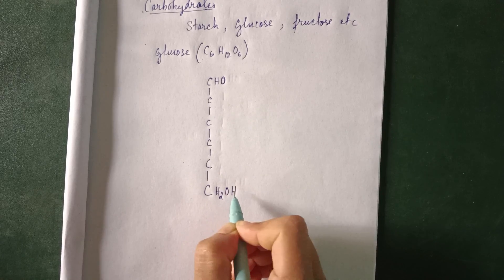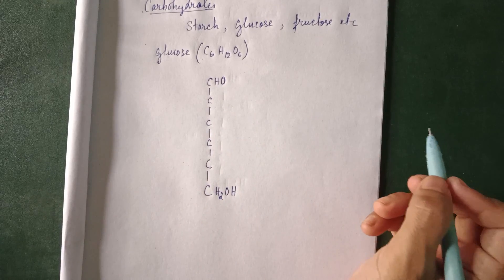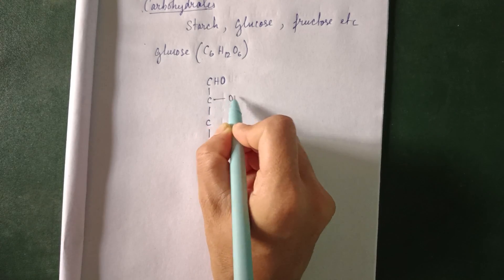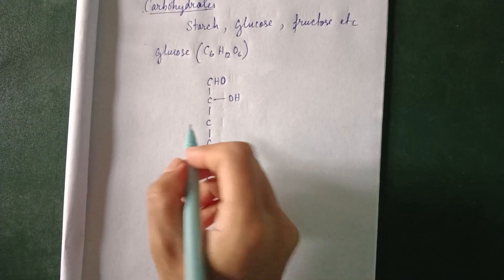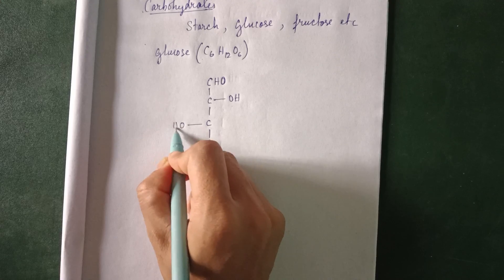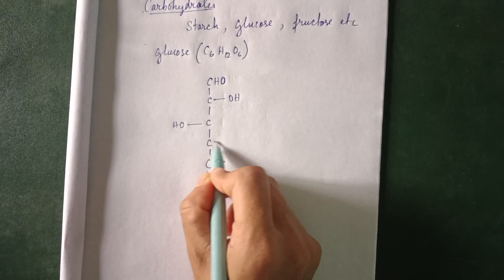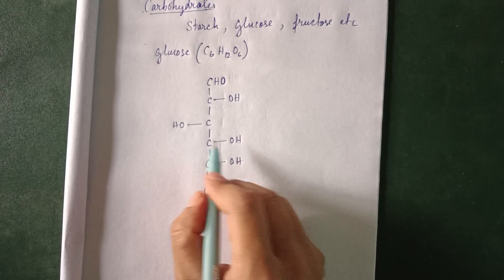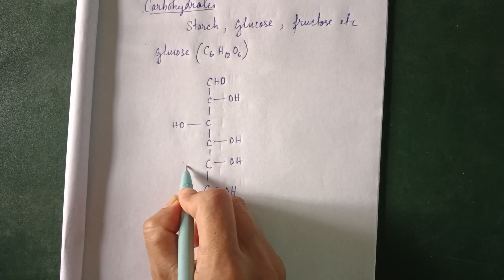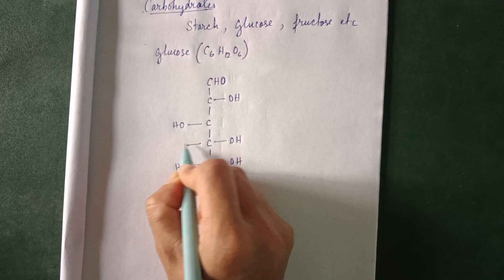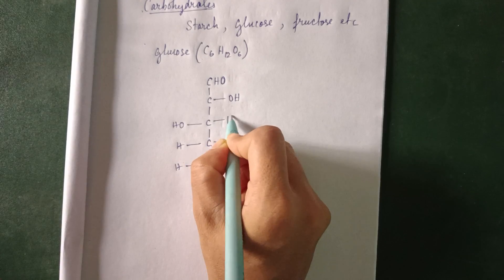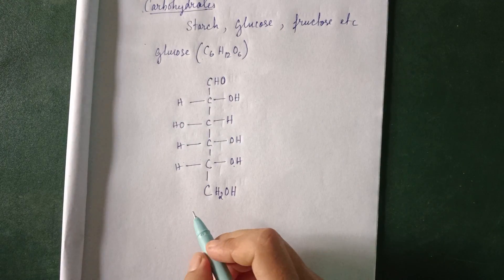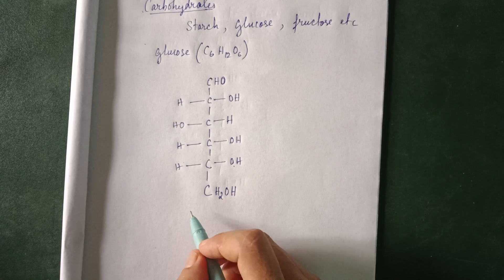The topmost carbon, make it CHO — that is the aldehyde group. The last carbon has CH2OH. Now for the OH groups: let me put the first OH on the right side, then left, then right, right, right. The rest you balance by hydrogen. So this is the structure of glucose in the Fischer projection form.